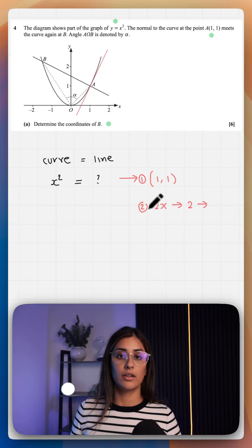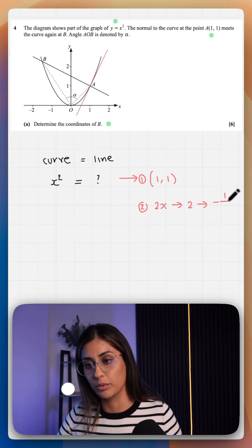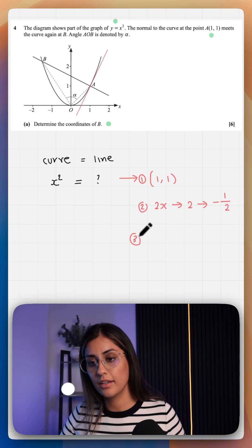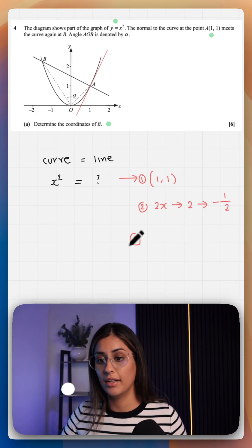But this is the gradient of the normal, so we flip it and find the negative reciprocal, which is minus 1/2. And then the third thing is we just plug it all back into the equation of a line.